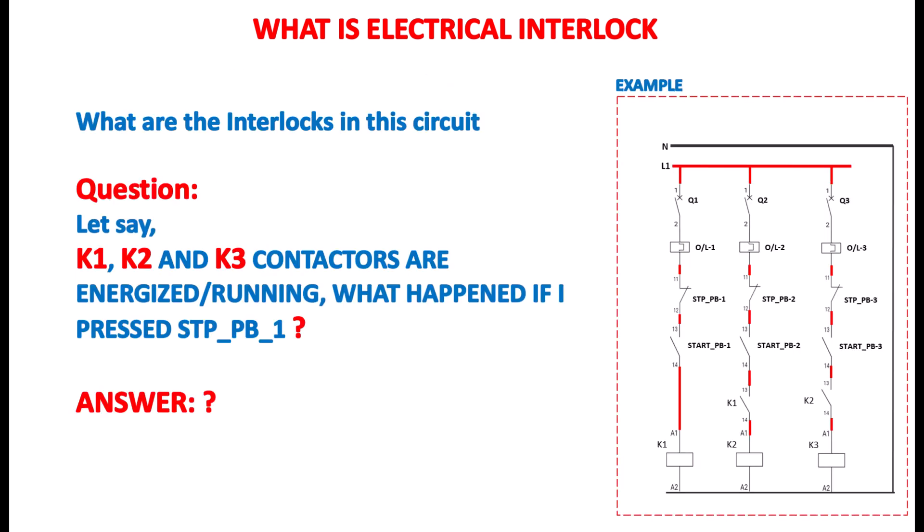Here's a question for you to think about. Imagine that K1, K2, and K3 contactors are all energized and running. Now what happens if I press STPB1, the stop push button? Think carefully. What would the system do if all these contactors are running, and you hit the stop button? How does the interlock system respond to this situation? If you understand how interlocks work in this scenario, go ahead and drop your answer in the comments below. Let's see if you can figure it out. I'll be waiting to read your thoughts.